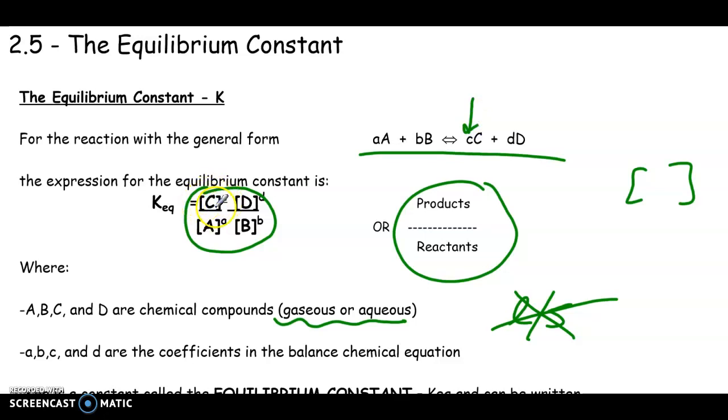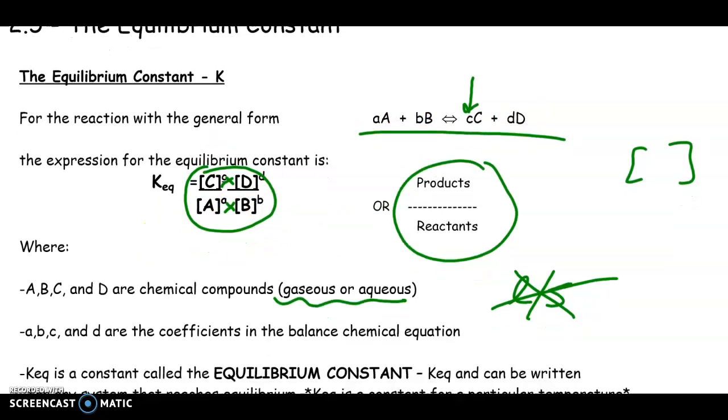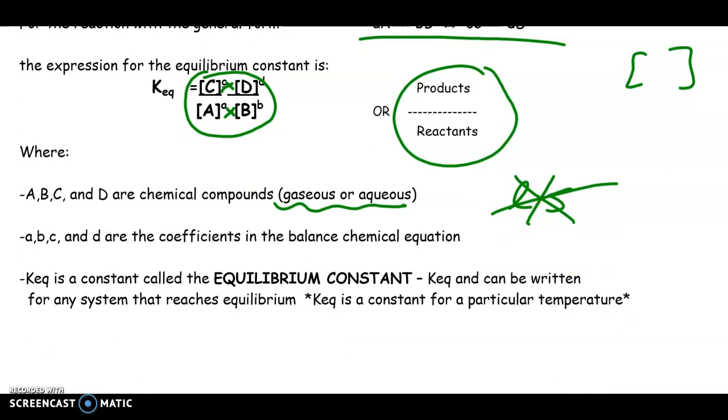When we set this up, it's products over reactants. You'll notice here it's C and D over A and B, and there are concentration symbols. Remember square brackets essentially mean concentration, and the exponent that is on that value is whatever the exponent is in your balanced chemical reaction.